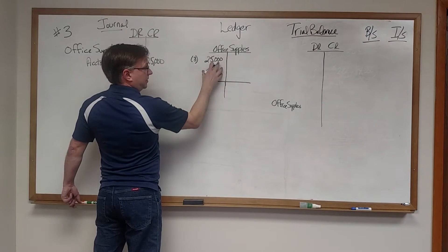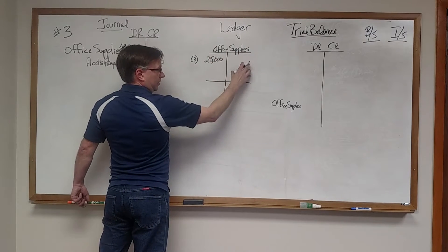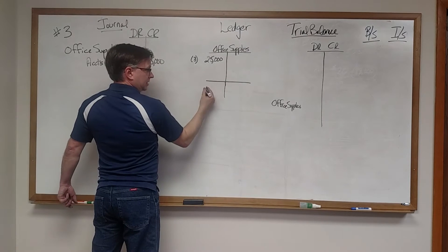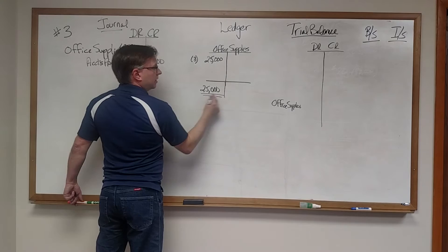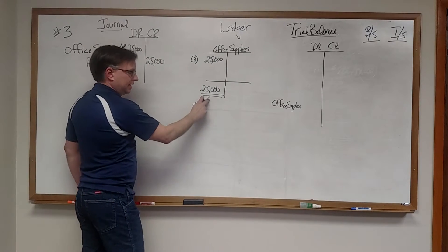So we add up the debits, subtract out the credits. If the debit side is more, which it is here, we record a balance of $25,000 on the debit side.